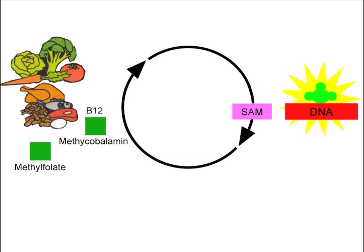Notice that SAM has a methyl group attached to it. SAM donates its methyl group to a substrate — this process is called methylation. In this example, its methyl group attaches to DNA, which is used to silence genes such as cancer genes.